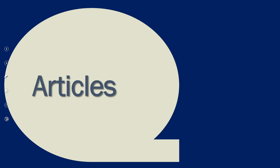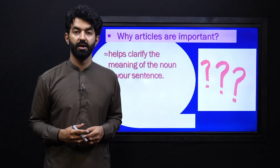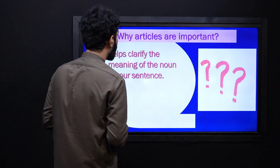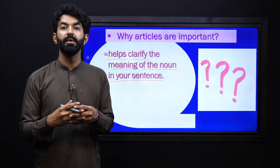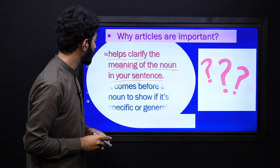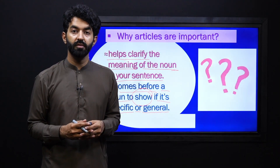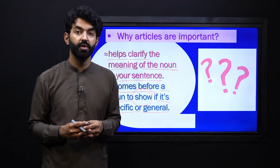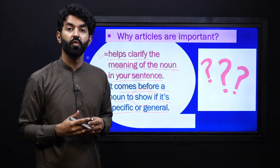Now let's revise what our articles are. Why are articles important? Why do we use them in our sentences and speech? Articles help us clarify the meaning of the noun in your sentences. It clarifies the meaning of the noun. Furthermore, it also comes before a noun to show if it's a specific one or general. With a general noun we use a and an, and with something specific we use the. These are the two purposes of articles and why they are important.